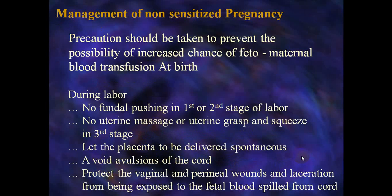Precautions during labor and delivery to prevent fetomaternal blood transfusion: avoid fundal pushing in the first or second stage of labor; avoid uterine massage or uterine squeezing in the third stage; let the placenta deliver spontaneously; avoid cord avulsion; and protect vaginal and perineal wounds from exposure to fetal RBCs spilled from the cord.